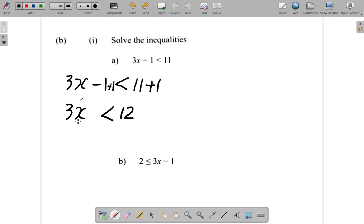After that, get rid of the 3. Divide by 3. 3 cancels 3. So you have x is less than. You must divide by 3 over here too. 3 into 3, 1, 3 into 12, 4. So x is less than 4.